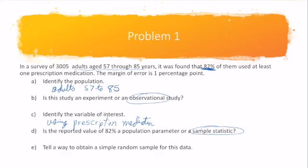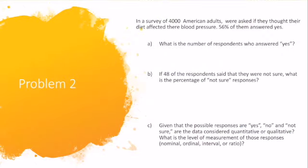For problem two, in a survey of 4,000 American adults, they were asked if they thought their diet affected their blood pressure. 56% of them answered yes. So if I want to know the number of respondents who answered yes out of the 4,000, I'm going to take 0.56, which is the proportion who said yes, times 4,000. That gives me 2,240.